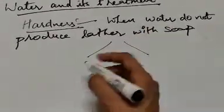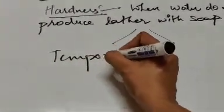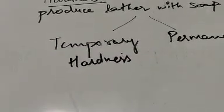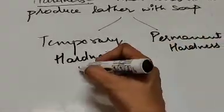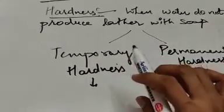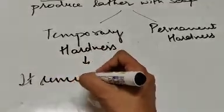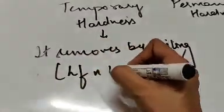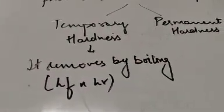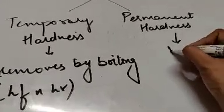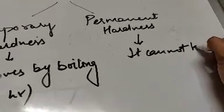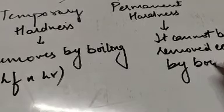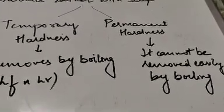Hardness jo hoti hai, woh do type ki hoti hai basically. Ek hoti hai temporary hardness, aur doosra hota hai permanent hardness. Temporary hardness — nama se hi pata lag raha hai — it is removed by boiling. Yeh temporary hoti hai nature mein, jo ki easily remove hoti hai. Aap paani ko half an hour ke liye boil kar dijiye, toh us mein se hardness remove hoti hai. Permanent hardness cannot be removed easily by boiling.